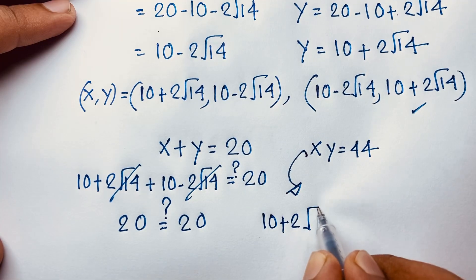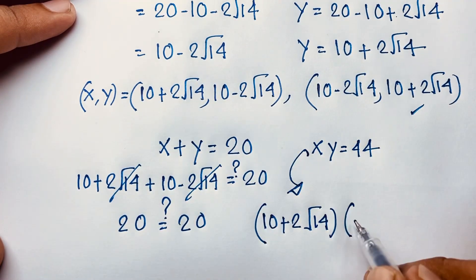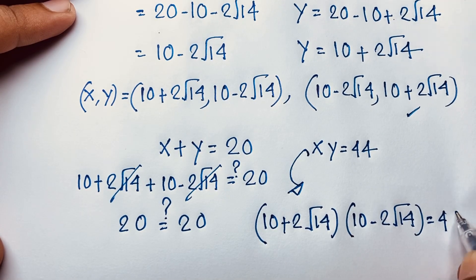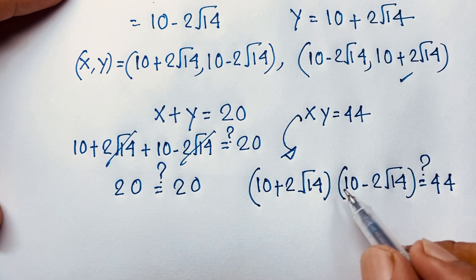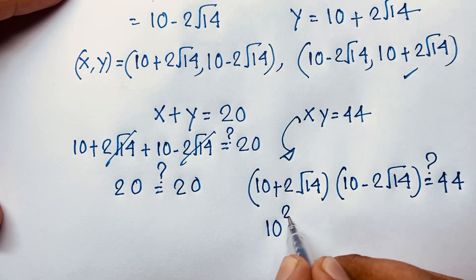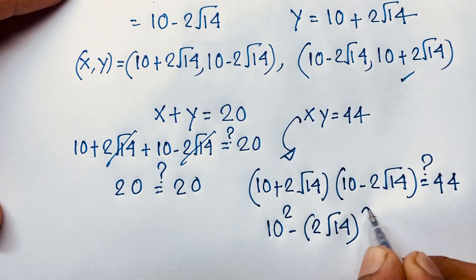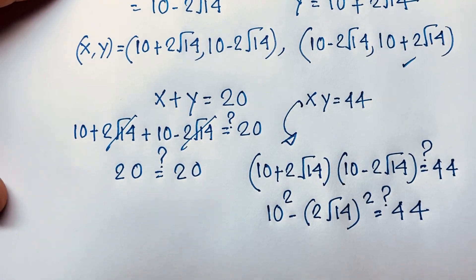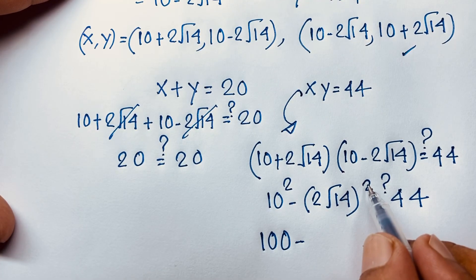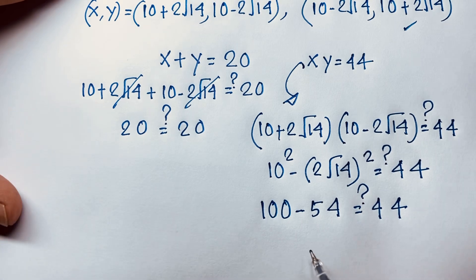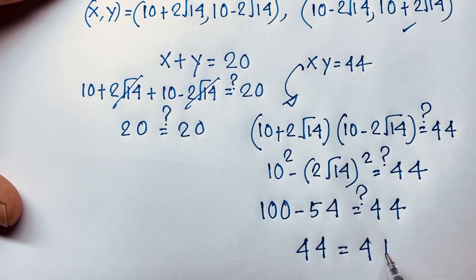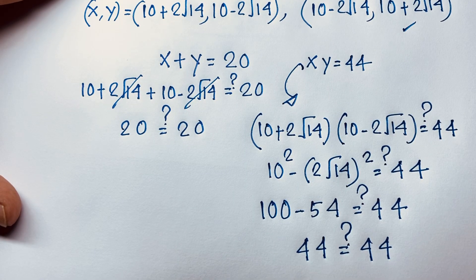Now verifying xy equals 44: (10 plus 2 square root 14) times (10 minus 2 square root 14). Using the identity (a plus b)(a minus b) equals a squared minus b squared, this gives 10 squared minus (2 square root 14) squared, which equals 100 minus 4 times 14, equals 100 minus 56, equals 44. Left hand side equals right hand side. This confirms our solution to this math olympiad question. Thank you — if you enjoyed this, please subscribe for more interesting videos.